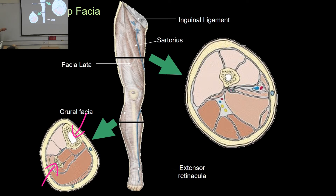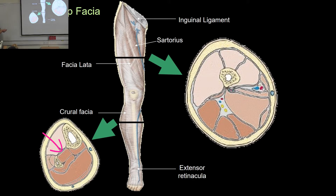There's a fibrous band holding the tibia to the fibula called an aponeurosis. So we have lots of new words — fascia, retinaculum, tendons, ligaments, and aponeurosis — but they all refer to fibrous tissue.